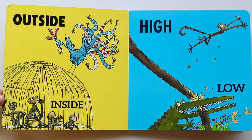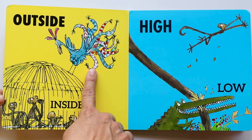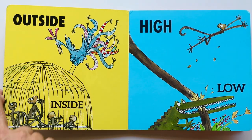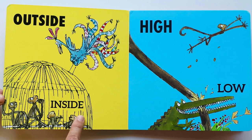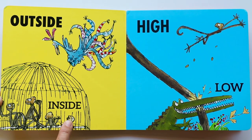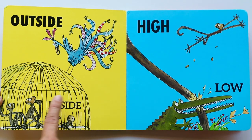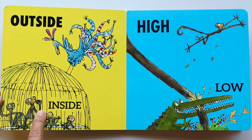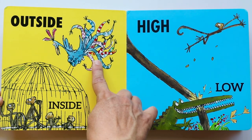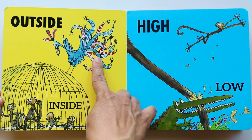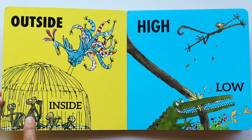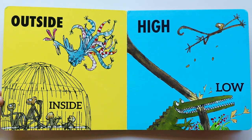Outside. The bird is outside the cage. Do you see that? This is a cage. And inside it looks like those are monkeys, and they're inside the cage. The bird is outside. So outside and inside are opposites.